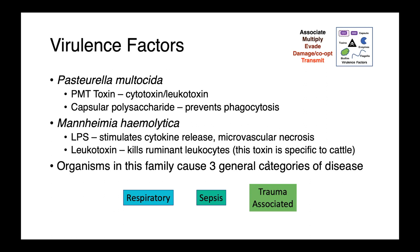Mannheimia haemolytica has LPS, as do most gram-negatives. This stimulates cytokine release and induces microvascular necrosis. It also produces a leucotoxin, which is specific to the leucocytes of cattle.